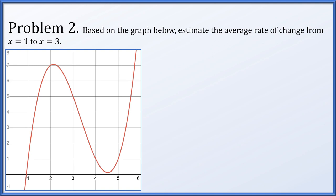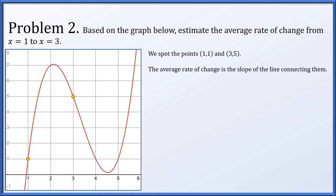In problem 2, based on the graph, we need to estimate the average rate of change from x equals 1 to x equals 3. We appear to have the points (1, 1) and (3, 5). Computing the slope: delta y over delta x — delta y is 4, delta x is 2, giving an average rate of change of 4 over 2, which is 2.